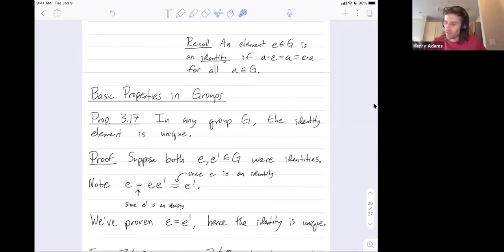That's the entire proof. We started with two arbitrary supposed identities and then we used the fact that E was an identity and that E prime was an identity to show that E and E prime are equal. So therefore, any two identity elements need to be equal to each other, and so the identity element in any group is unique.